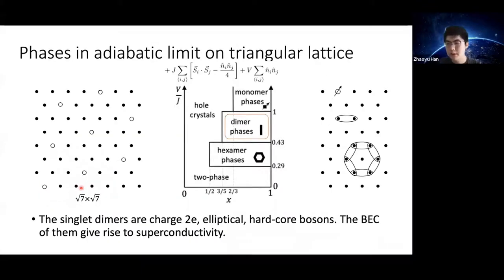The above analysis in the effective t-J-V model applies to any lattice. But now we consider a specific case, the 2D triangular lattice. In the adiabatic limit, the quantum hoppings are very small, so they can be neglected in the first step. We can just solve the problem for the interaction J and V.